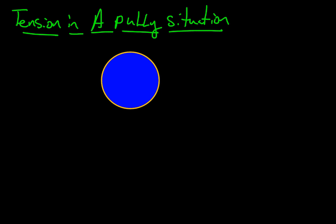This is meant to represent our pulley, and we'll draw two objects hanging from the pulley, one on either side. We'll make them different masses. So this is a rope going over top of a pulley. Put a mass on each side and see what we can figure out about it.